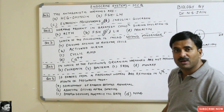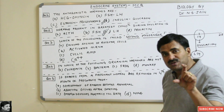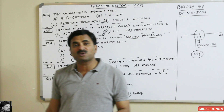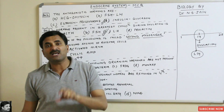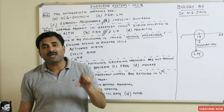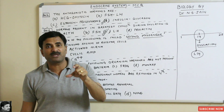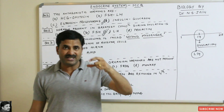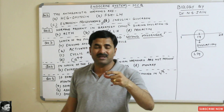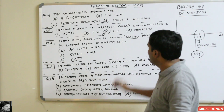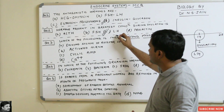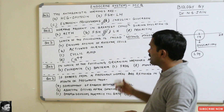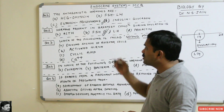So the correct answer is option C — the luteinizing hormone. If you see the picture in the NCERT class 12 textbook, you will see that on the 14th day of the menstrual cycle, LH is secreted at its peak concentration level. So the answer is LH.